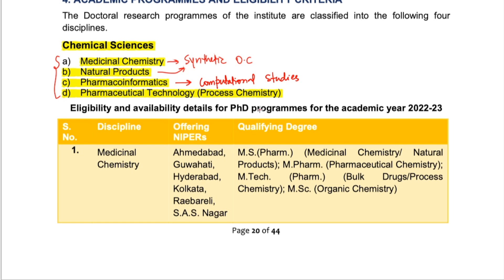The last discipline is pharmaceutical technology or process chemistry. This is a study in which small-scale research or lab-scale work is taken up to the industrial level — how you can scale up your research. For example, if you do a reaction in a lab and produce very little product, process chemistry is about how you can make it in a large scale.